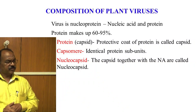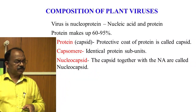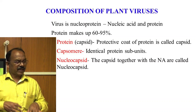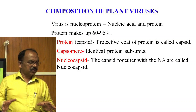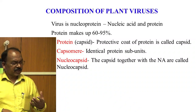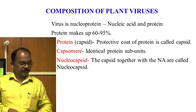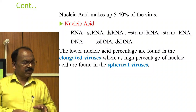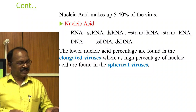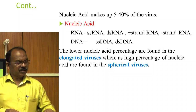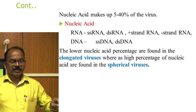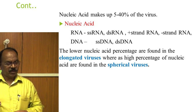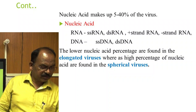Composition of plant viruses: A virus is a nucleoprotein — meaning nucleic acid within protein. Protein makes up 60 to 95 percent of the virus. The protective coat of protein is called the capsid, and identical protein subunits are called capsomeres. The capsid together with the nucleic acid is called the nucleocapsid. Nucleic acid makes up 5 to 40 percent of the virus, and may be RNA or DNA — including single-stranded RNA, double-stranded RNA, positive-sense RNA, or negative-sense RNA; DNA may be single-stranded or double-stranded. Lower nucleic acid percentages are found in elongated viruses, whereas higher percentages are found in spherical viruses.